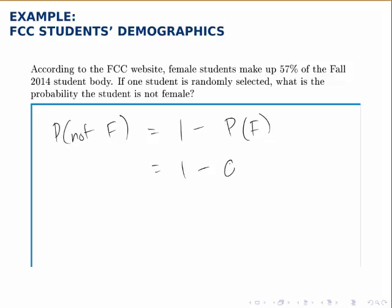57% as a proportion is 0.57, so we get 1 minus 0.57. If we were dealing with percentages, we could write 100% minus 57%, but either way we get 0.43, or 43%. So if 57% of students are female, the other 43% are not — meaning the chances that we draw a student that isn't female is 43%.